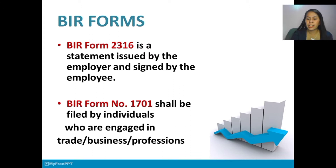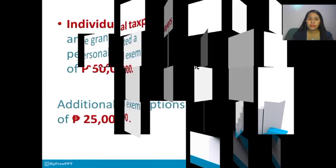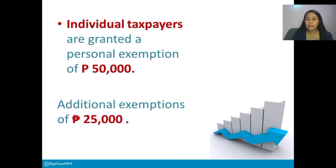The two common BIR forms for individuals in filing income tax payment are: BIR Form 2316, which is a statement issued by the employer and signed by the employee, and BIR Form 1701, which shall be filed by individuals who are engaged in business or professions. Remember, all individual taxpayers are granted a personal exemption of 50,000 and an additional exemption of 25,000, but it is only up to four dependents.